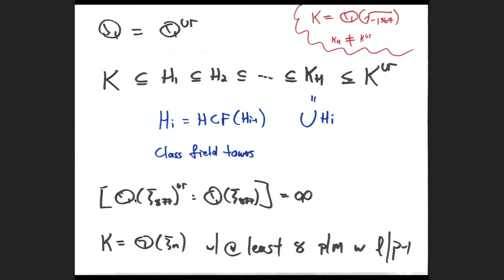The Galois group of that union K^H over K can be infinite. The great starting place is the Golod-Shafarevich theorem, which gives criteria for K^H to be infinite when K is a certain quadratic field. For instance, Q adjoined zeta_877 — 877 is prime — happens to have infinite class field tower. More generally, if you take Q adjoined zeta_M where M is divisible by at least 8 distinct primes congruent to 1 mod L for some fixed L > 2, then it also has infinite class field tower.